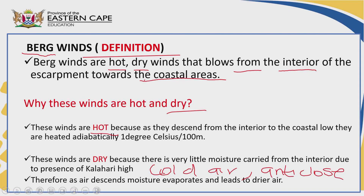So, the definition: Bergwinds are hot and dry winds that blow from the interior into the coastal area. They are hot because as they descend the lower side of the mountain they are heated adiabatically. They are dry because over the interior the Kalahari High is associated with less moisture, and as the air descends from the interior towards the coastal low, it becomes drier and drier.